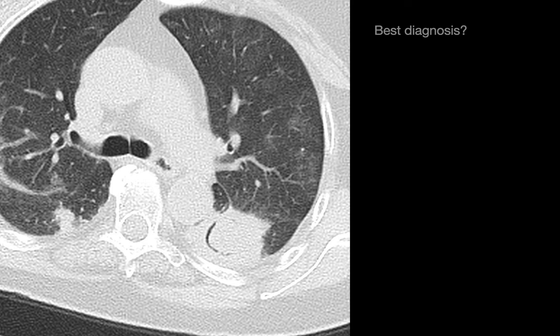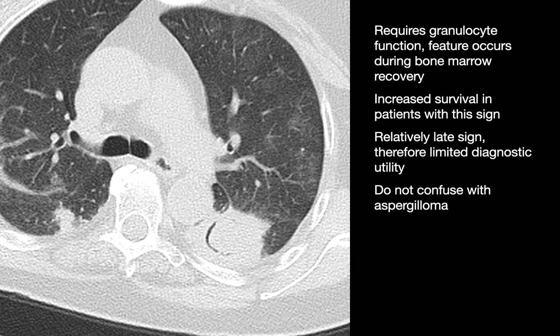With an air crescent sign — where we see this thin uniform cavitation within a solid nodule or mass — the best diagnosis is invasive aspergillosis. When we see cases of invasive aspergillosis manifest with this sign, it's usually a positive prognostic sign indicating that the immune system is beginning to recover. Don't confuse this with an aspergilloma — the monod sign — where the area of cavitation is not a one or two millimeter rim but a large space.